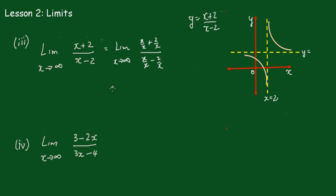Now this will be equal to 1 plus 2/x, all over 1 minus 2/x. And of course as x goes to infinity, the 2/x terms will go to 0, so the limit is going to be 1.